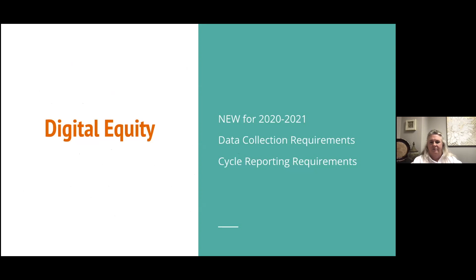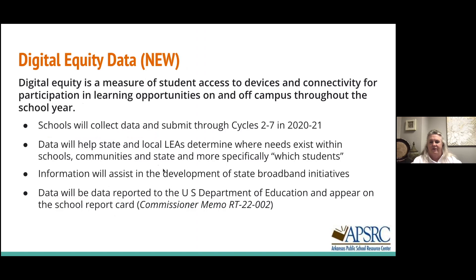I'm going to shift into a topic on digital equity that's new for this year. There are some data collection requirements and cycle reporting requirements — this is a heavy lift on school systems. The state has defined, through partnership with CCS, that digital equity is a measure of student access to devices and connectivity for participation and learning opportunities on and off campus throughout the school year. Schools are going to be charged this year to collect and submit data on each student through cycles one through seven during the school year, with the final collection in June. This data will help state and local districts determine not just what percentage of kids had access, but which students specifically did or did not, and where that equity gap exists for which student.